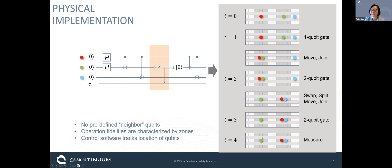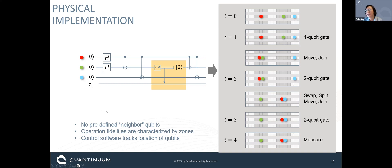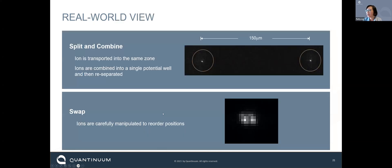We can even record the measurement outcome — whether the qubit is in zero or one — and depending on that outcome, we can change our circuit in real time and perform different operations on the rest of the qubits. In this scheme there's no fixed neighbor connectivity — all qubits are quite dynamic, moving around all the time. Our compiler figures out where they need to go automatically. These operations are really characterized by zones rather than strict qubit connectivity.